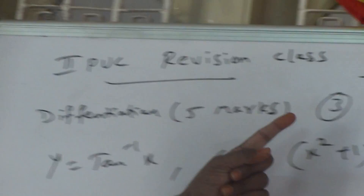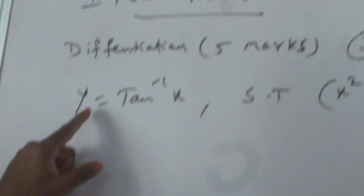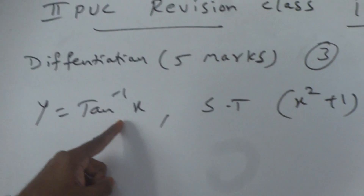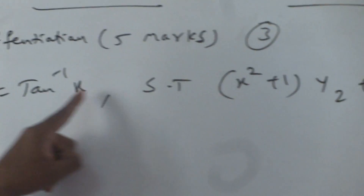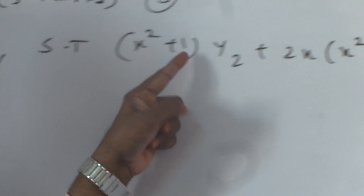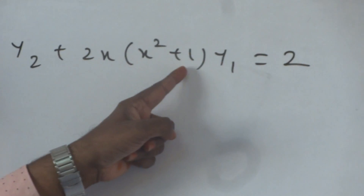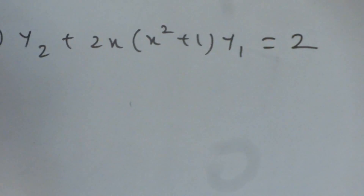Differentiation, 5 marks, third question. This is about: given y is equal to tan inverse x, show that x squared plus 1 into y2, plus 2x squared into x squared plus 1 into y1, is equal to 2.